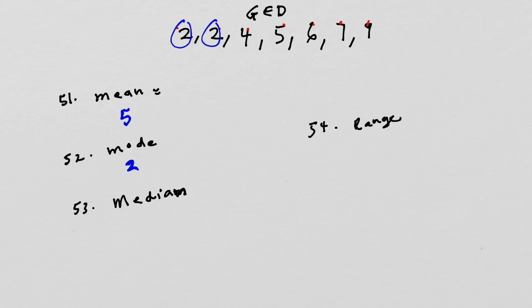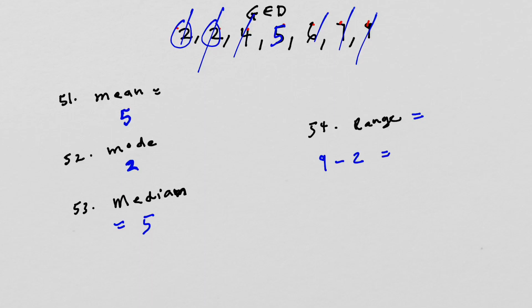The median is really the middle number. If you arrange them in order, the middle number — we have one, two, three things here and one, two, three things here, so five is the middle number. That will be your median. Now for the range, you subtract the biggest number — which here is nine — minus the smallest number, which is two. So our range will be seven.